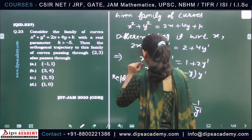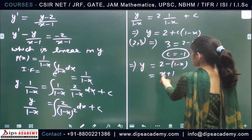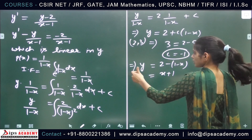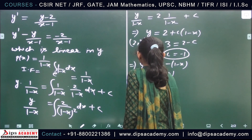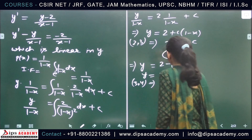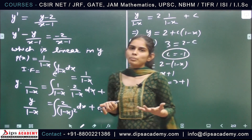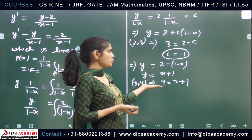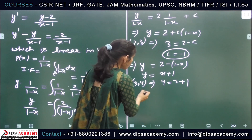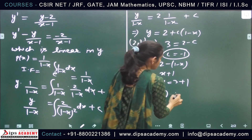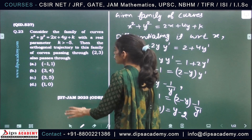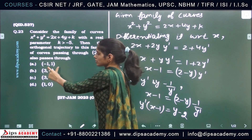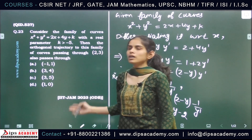Now we check the given options. For (−1, 1): −1 + 1 = 0 ≠ 1, so this is wrong. For (3, 4): 3 + 1 = 4, which satisfies y = x + 1. Therefore the orthogonal trajectory passes through the point (3, 4), and option B is the correct answer.